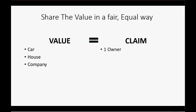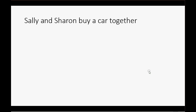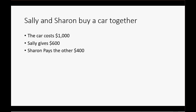If there's only one owner, the owner owns the entire ownership equity and owns the entire asset. But if there are several owners, we need a fair way to measure how much ownership claim or ownership rights is in the asset. Let's start with a simple example. Let's imagine that Sharon and Sally buy a car together. If the car costs $1,000 and Sally gives $600 towards the purchase price and Sharon pays the other $400, what would the ownership structure look like?